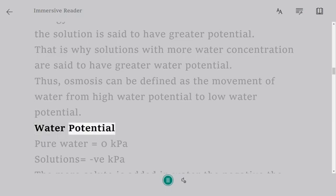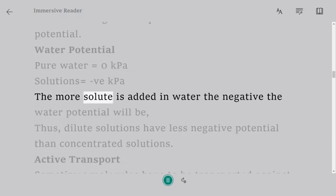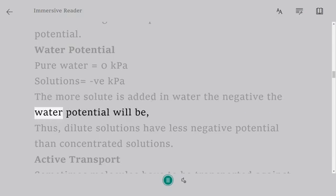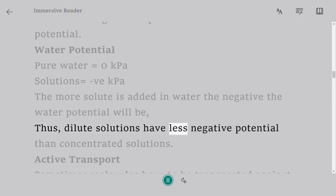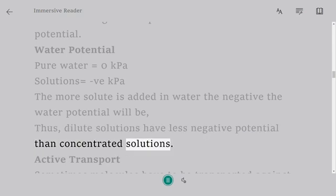Water potential: Pure water equals 0 kPa. Solutions equal negative kPa. The more solute is added in water the more negative the water potential will be. Thus, dilute solutions have less negative potential than concentrated solutions.